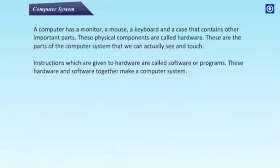A computer system consists of a monitor, a mouse, a keyboard, and a case that contains other important parts. These physical components are called hardware — the parts of the computer system that we can actually see and touch. Instructions given to hardware are called software or programs. Hardware and software together make a computer system.